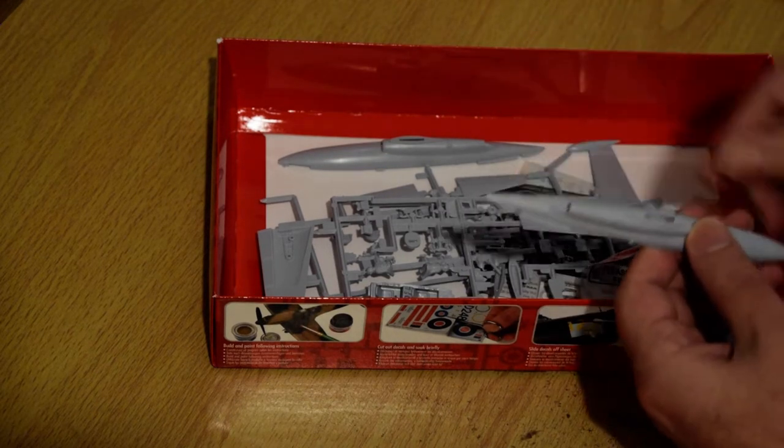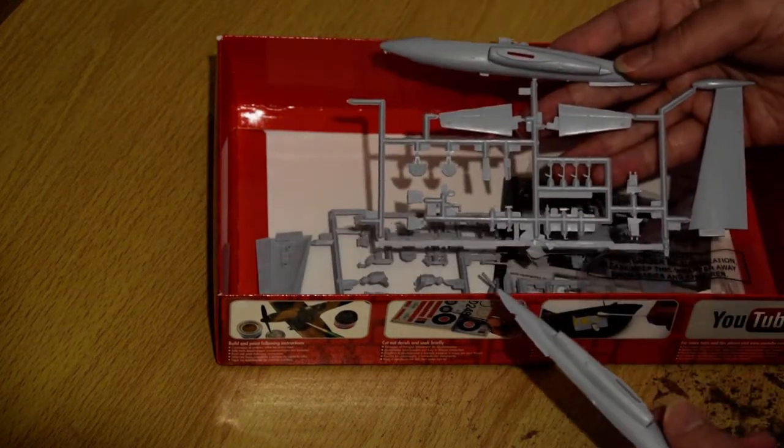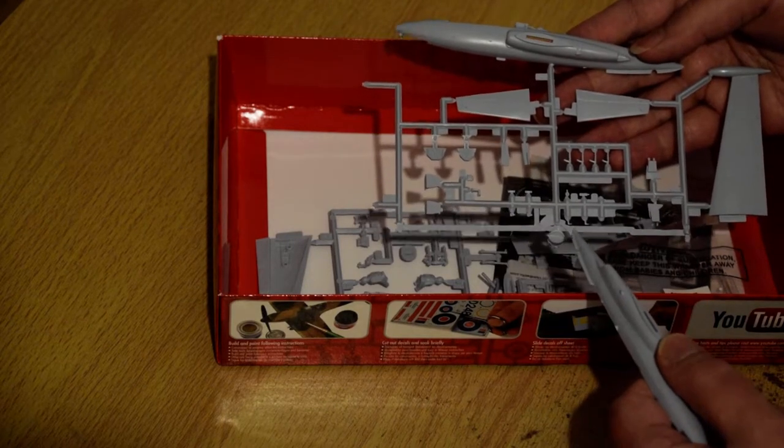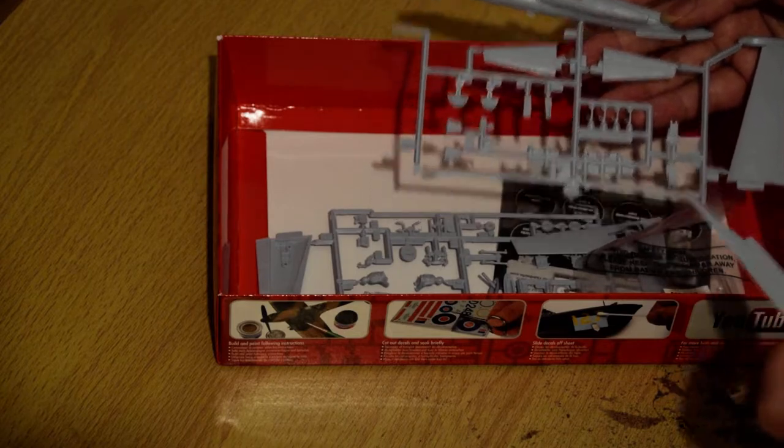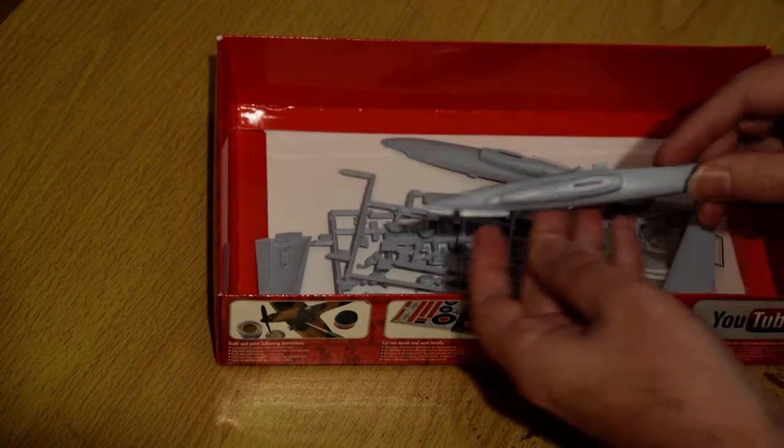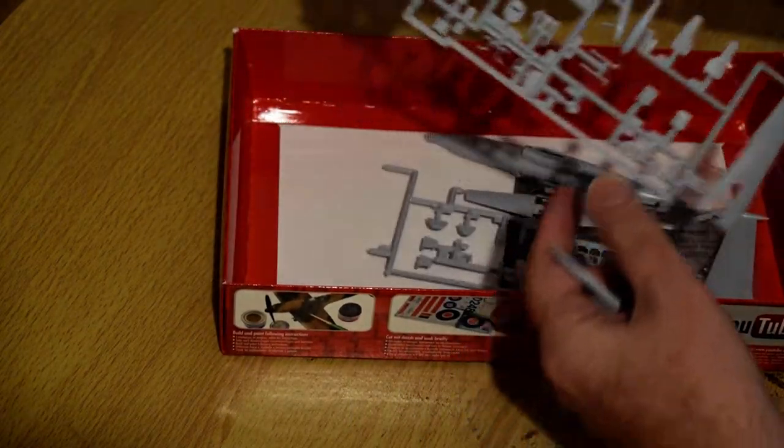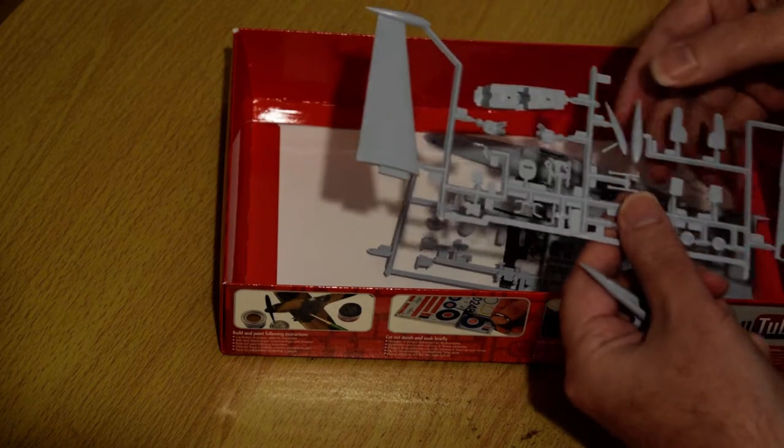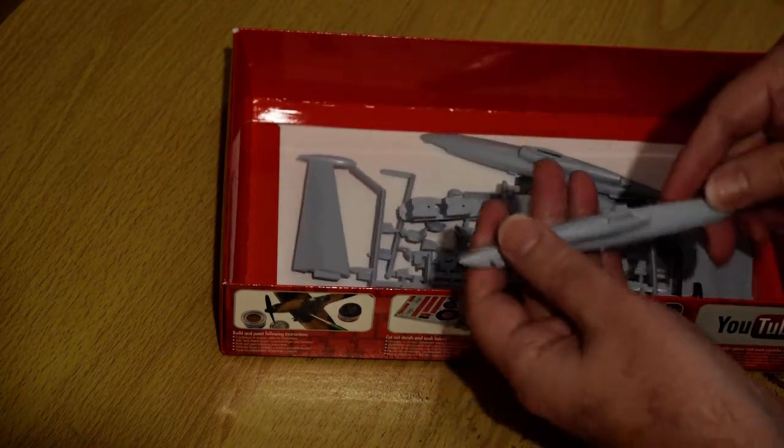So the fuselage is from the 70s and looking at the sprue you can see it's a classic kit really. But what they've done is got a bit of a hybrid thing going on, whereas the fuselage and in fact the wings which come in two parts as they traditionally did are from the 70s.